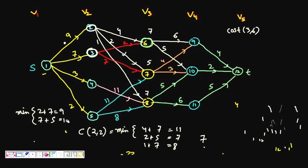For node 4 there is just one path, giving 11+7 = 18. For node 5, options are via node 7 (11+5=16) or via node 8 (8+7=15). Minimum is 15. So stage 2 costs: node 2=7, node 3=9, node 4=18, node 5=15.